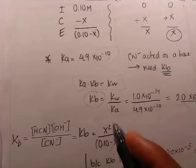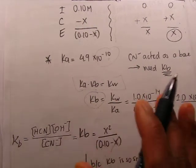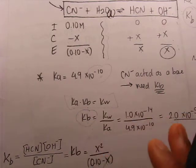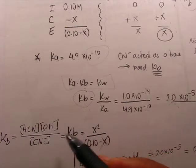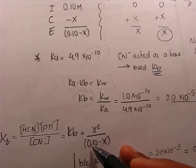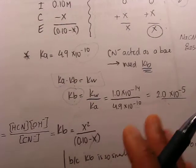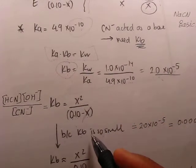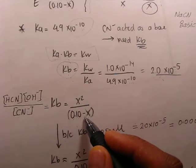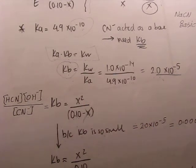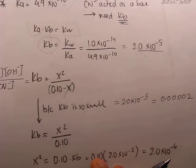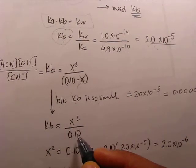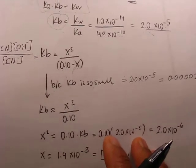Now we can write the Kb expression: Kb equals products divided by reactants, which is [HCN][OH⁻] divided by [CN⁻]. This gives Kb equal to x squared divided by 0.10 minus x. Since Kb is 2.0 times 10 to the minus 5, which is very small, we can drop the x in the denominator as negligible.